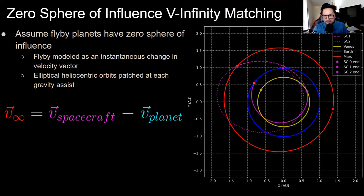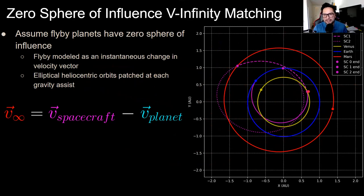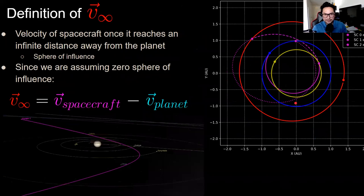In v-infinity matching we assume the flyby planets have zero sphere of influence — when a spacecraft arrives at Venus, at the next timestep it has the same position but a new velocity resulting from the gravity assist. This is a good first-order assumption because time within a planet's sphere of influence is on the order of a day, while the total trajectory is years. This is called the patched conics method — elliptical heliocentric orbits patched at each gravity assist.